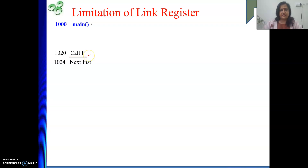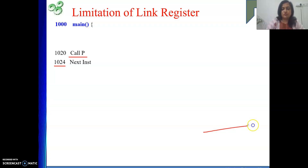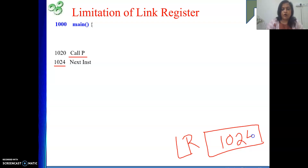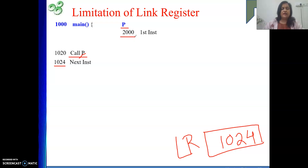When we use a link register, there is only one link register in our system. As part of the call instruction execution, the address of the next instruction, that is 1024, will be stored in the link register. Then PC will be loaded with the address represented by the symbolic name P. Let's say P represents address 2000, so our next instruction execution will start at location 2000 — that is function P or subroutine P.